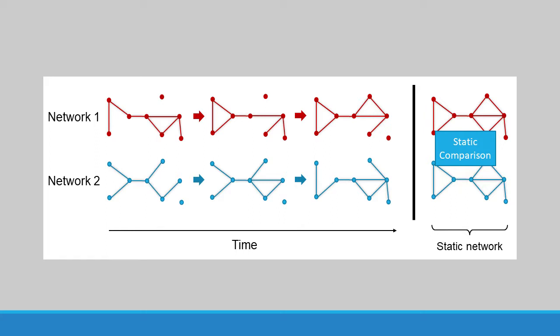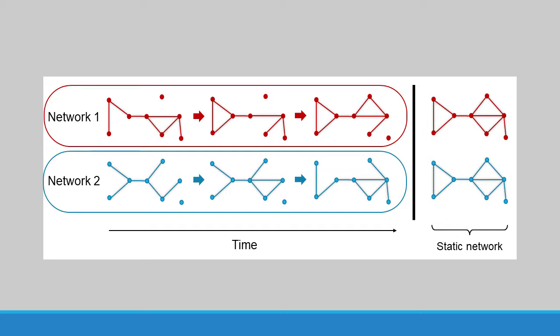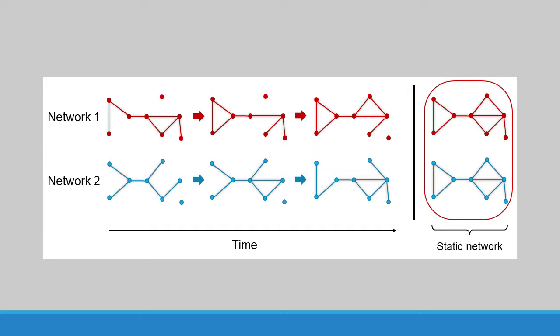However, when doing this, it's possible that two networks that are temporally different can be modeled as the same aggregate static network. In this case, comparing the static versions will fail because the two aggregated networks will be identified as similar when the two networks are actually different. Clearly, we need a better solution.